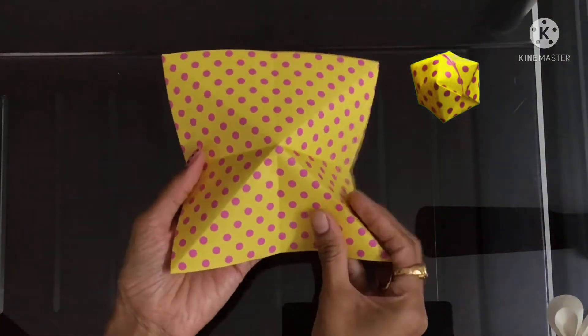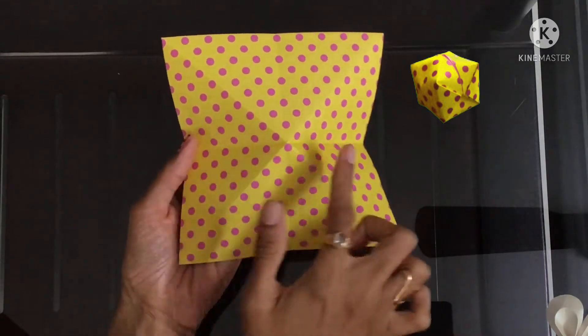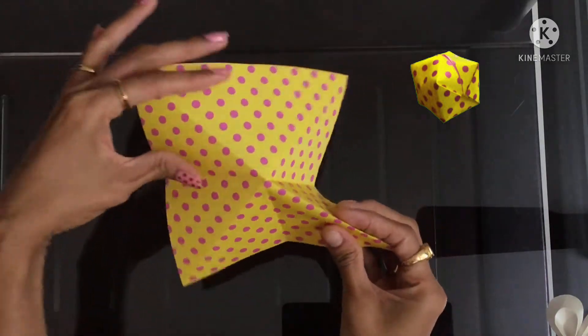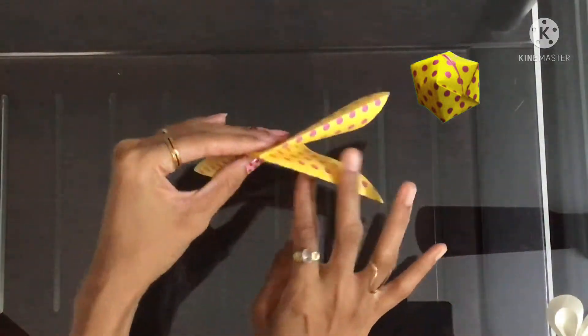Push it upwards in the center point and you can see four triangles here. Collapse it into a water bomb base.